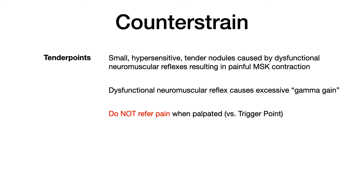So what are these tender points? The goal of counterstrain is to improve the pain associated with tender points. Tender points are small, hypersensitive tender nodules, and these nodules are caused by dysfunctional neuromuscular reflexes, which result in painful musculoskeletal contraction. It's really caused by something called excessive gamma gain — we'll talk about that in just a second, but gamma gain is a term you need to be familiar with.